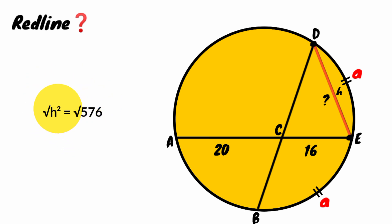Here, square root of h squared is h, while here square root of 576 is 24. So h, which is the red line, equals 24.